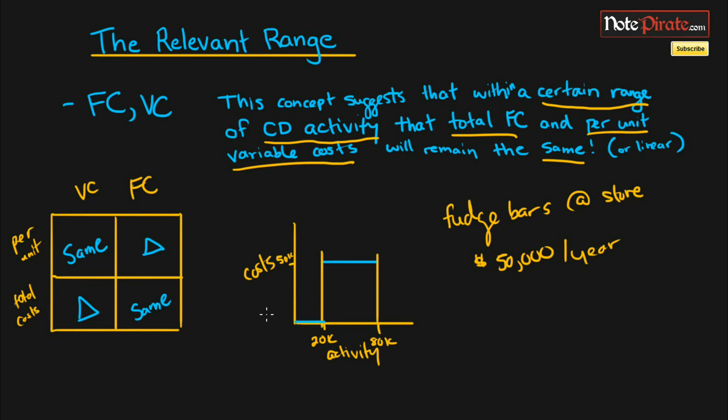So we would have $0 of fixed cost since we would not have a store. If we were selling above 80,000 units then we would probably need to expand and create a second store so we would have $100,000 of fixed cost because we have two stores now. So as you can see, the fixed cost is going to remain the same within the relevant range but outside of it it can change.